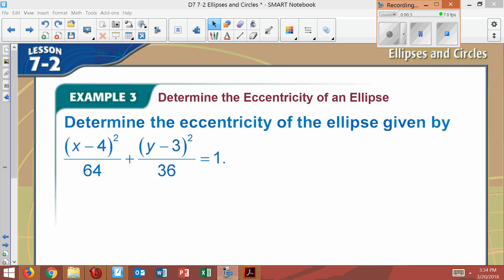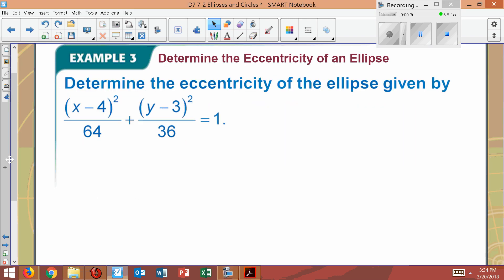So that's where we get this. So it says determine the eccentricity of this ellipse. Well, first, let's think about eccentricity. The formula said is C divided by A. And so your A comes from the bottom. It's the bigger number.